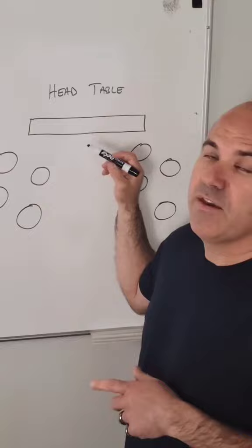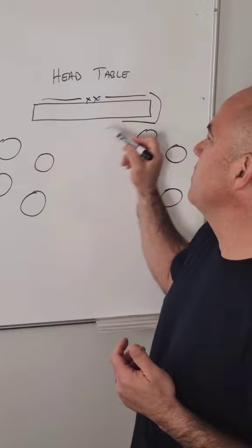If you went with a head table, usually the bride and groom would sit here and you have your wedding party here. Sometimes their plus ones, if you want to come around the other side of the table, they can sit at that table as well.